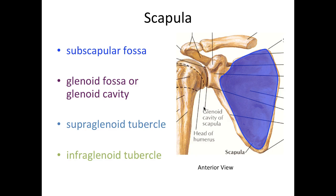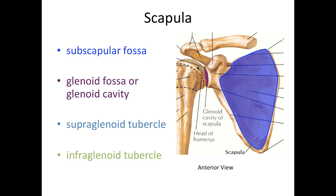The next structure is called the glenoid fossa or cavity. It's just a shallow depression at this end where we're going to have an articulation — forming a joint — with the head of the humerus. On this glenoid fossa we also have two tubercles. Remember, tubercle means a sharp bump.